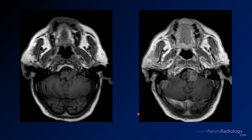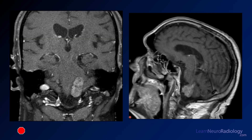Now you have a T1 pre-contrast and post-contrast — pre-contrast on the left, post-contrast on the right. Try to decide if you see some enhancement. We also have coronal and sagittal images through the lesion. These are both post-contrast T1, so hopefully by now you've come up with a differential diagnosis. There's a lesion in the fourth ventricular outflow tract.